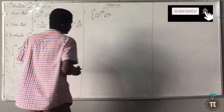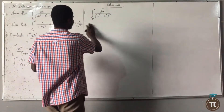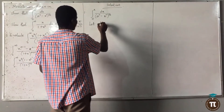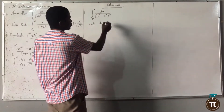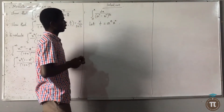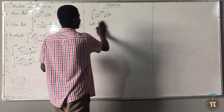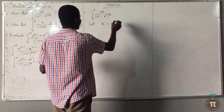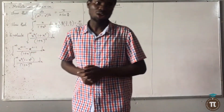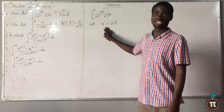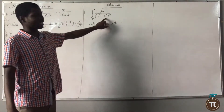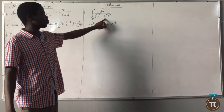From here, the first thing is to let s be equal to a raised to the power of at. So you will let s equal to a raised to the power of at, and s^n will equal a^n·t.